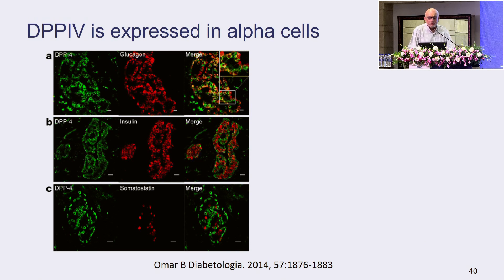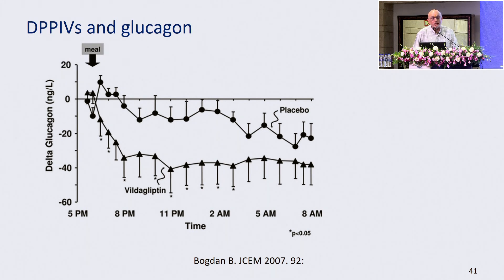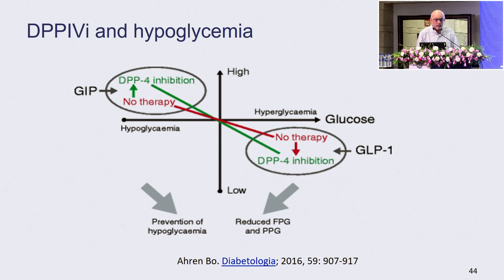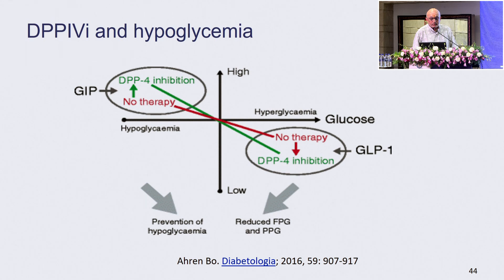Our favorite drug, DPP-4 inhibitors, are expressed in alpha cells. When you give them, glucagon comes down. I believe DPP-4 inhibitors not only do not cause hypoglycemia, they protect you from hypoglycemia. That's because when you give DPP-4 inhibitors, glucagon comes down. In hypoglycemia, it works at the level of GIP; when there's hypoglycemia, it works at the level of glucagon. It's very, very interesting.